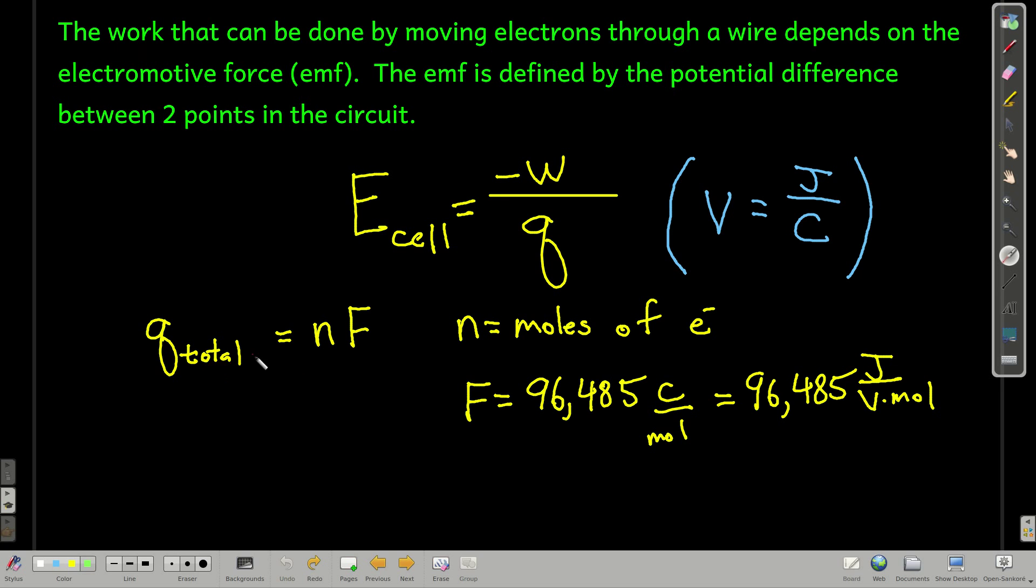The total charge when n moles of electrons is transferred is equal to the number of moles times the charge on one mole of electrons. The charge on one mole of electrons is called Faraday's constant. And at least to five sig figs, it has this value here, 96,485. And you guys would do well to memorize or put on your card that number. The units of Faraday's constant are coulombs per mole, charge per mole.